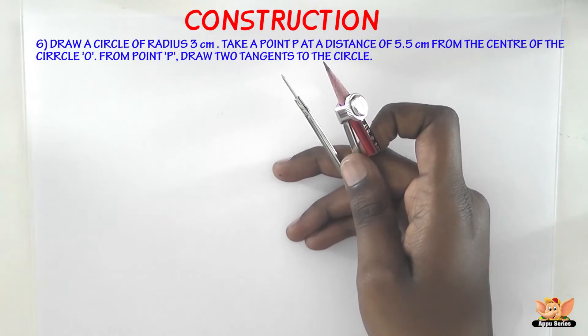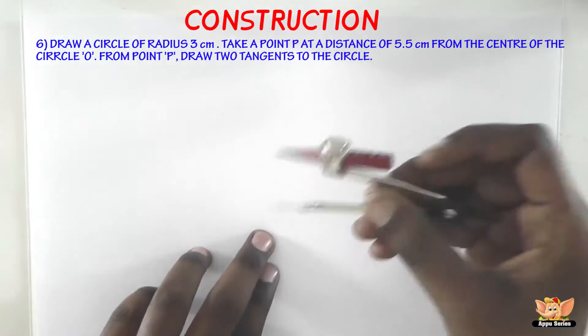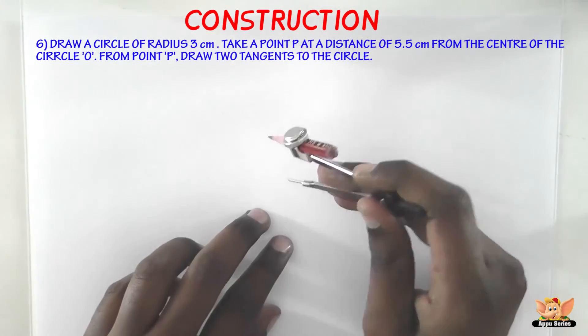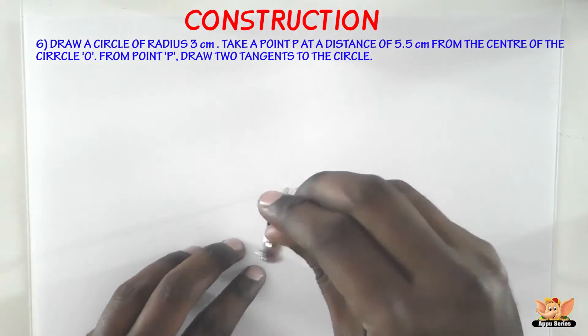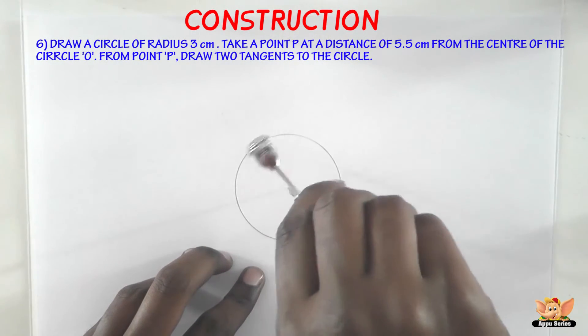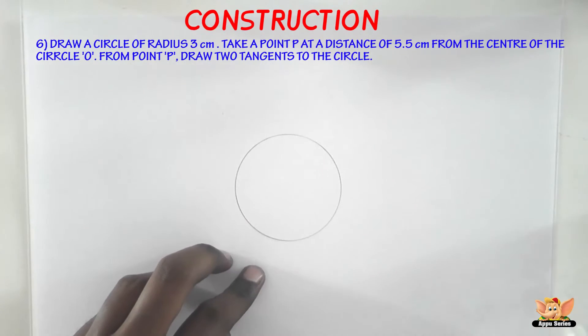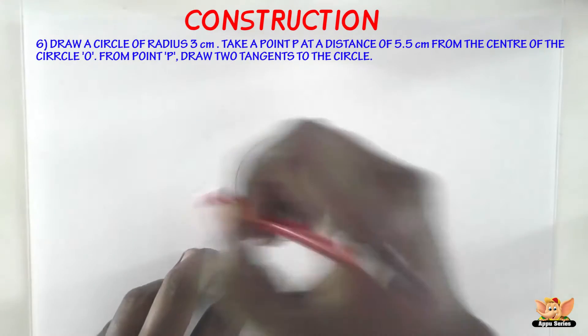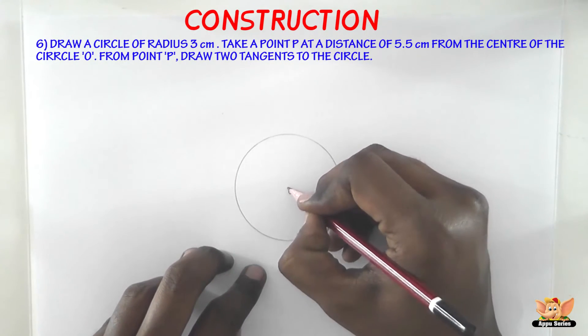So remember in this case we know the center but we need to draw the tangent from an external point which is already given. So first step is to draw the circle of radius 3 cm. Locate the point O. Here it is O.